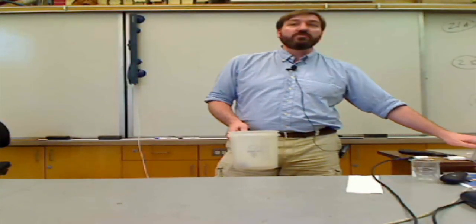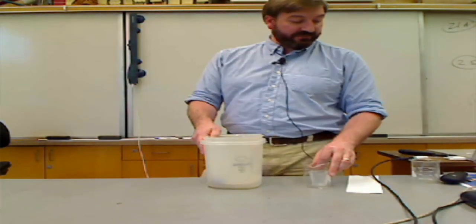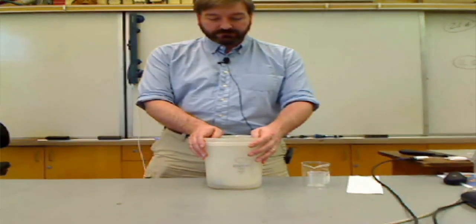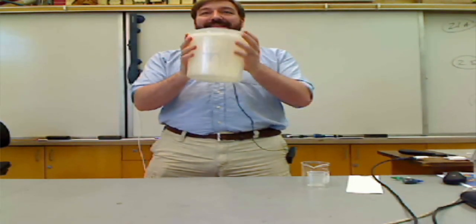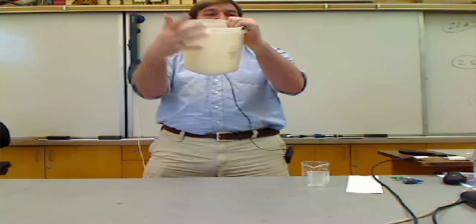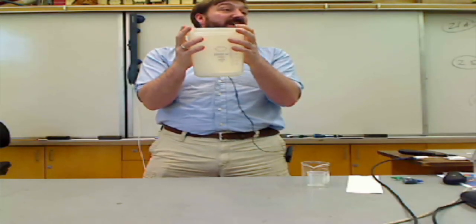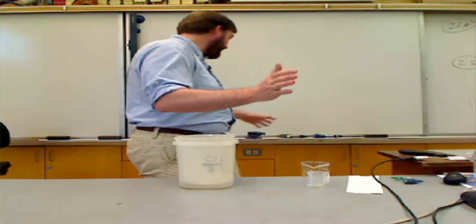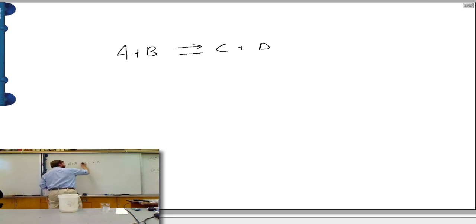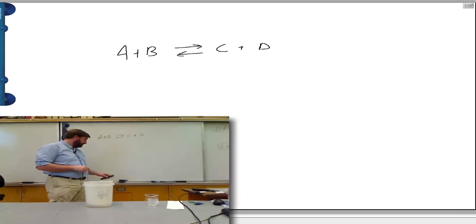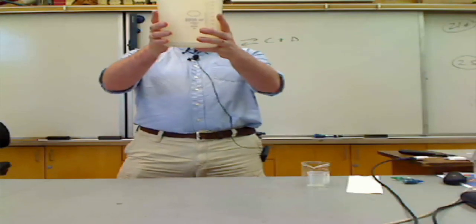Before we move on to some new stuff, I'd like to give you a quick demonstration — a way to visualize equilibrium. We have a couple of plastic containers here. Envision these together, fitting inside each other. This is our reaction vessel where our reaction is taking place, where we have chemicals: A + B going to C + D — a generic chemical reaction. And remember, we're now talking about reactions that are reversible, so we can also have C and D reform A and B.